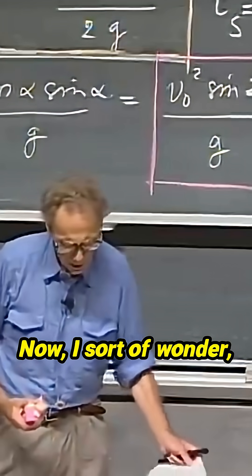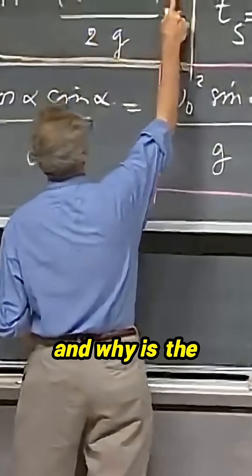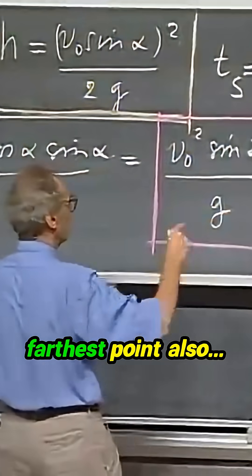Now, I sort of wonder, and you should too, why is it that the highest point in the sky has a v zero squared? And why is the farthest point also...